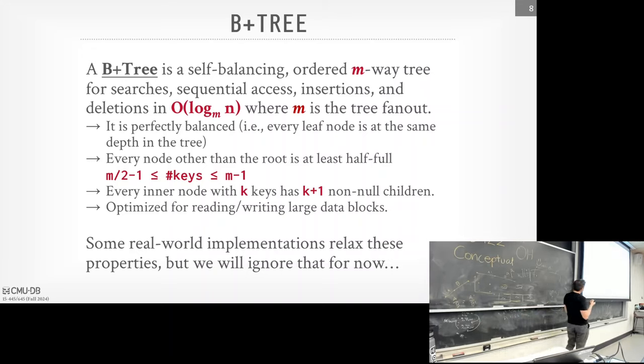The textbook defines these properties, but real-world implementations don't always follow them. In fact, the Postgres file path is backend/access/nbtree/README — 'nb' means non-balanced — because Postgres breaks some of these requirements to get better performance. But let's first understand the textbook definition before we see how to break it.